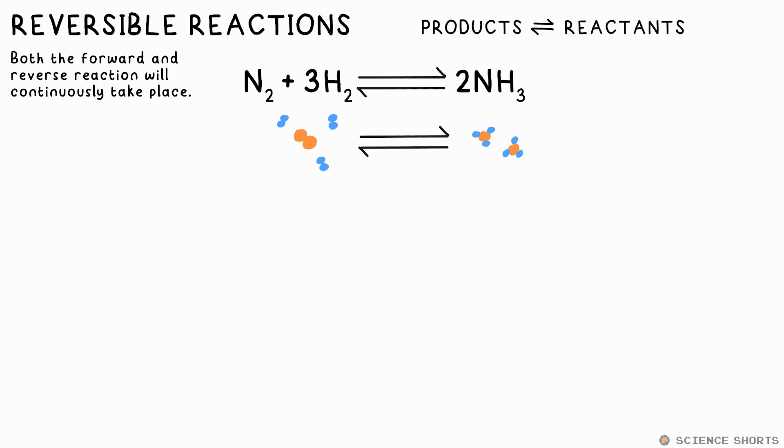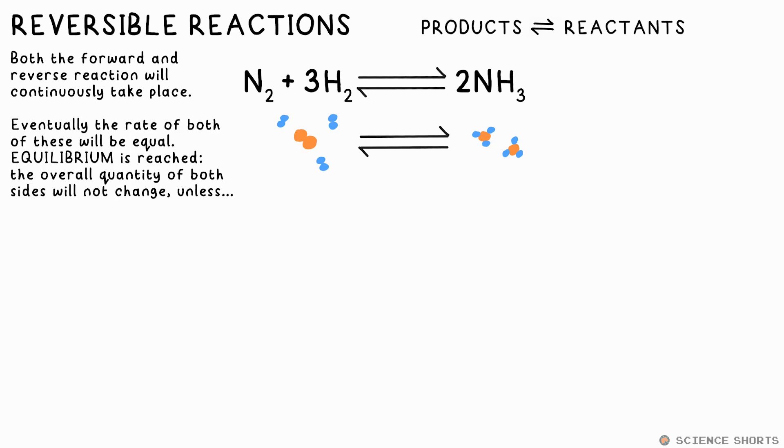In a closed system, that is, no particles or energy goes in or out, both reactions continually take place. Eventually, the quantity of particles on both sides will reach a point at which the rates of both the forward and reverse reactions will be the same. So that means there'll be no more overall change in the quantities on both sides.